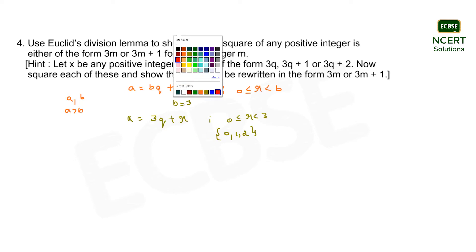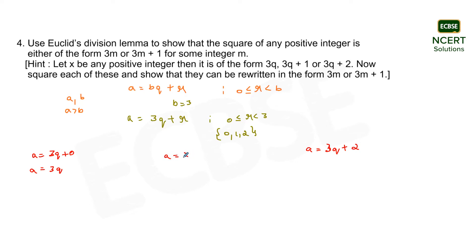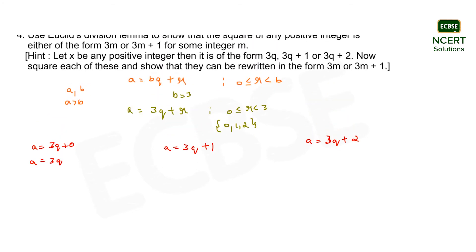First, substituting r equals 0 into a equals 3q plus r gives a equals 3q. Substituting r equals 1 gives a equals 3q plus 1. And substituting r equals 2 gives a equals 3q plus 2. So the three possible forms of a are: 3q, 3q+1, and 3q+2. The question asks us to square each positive integer in these forms.